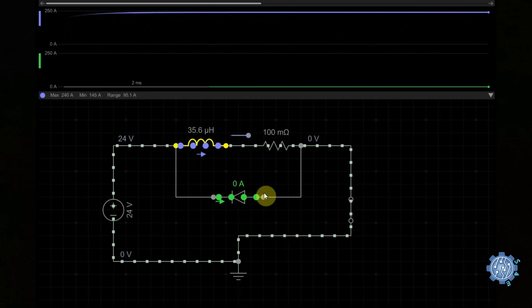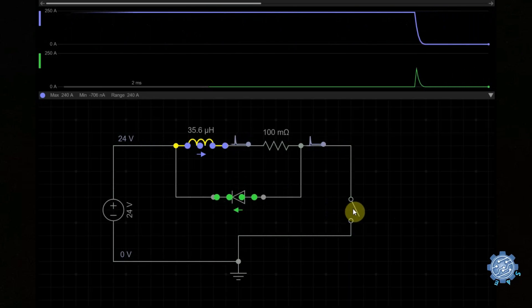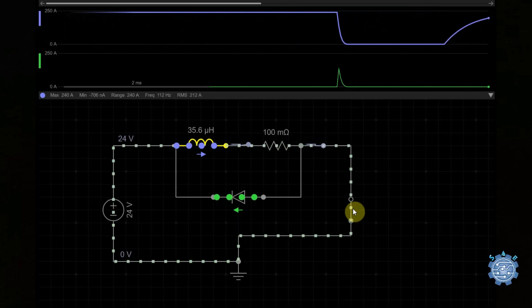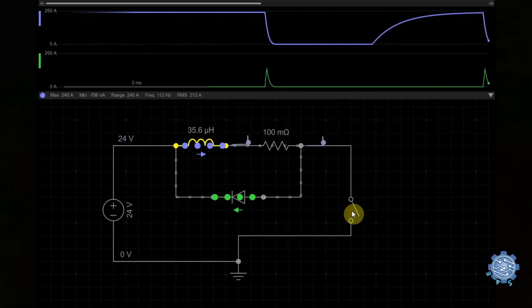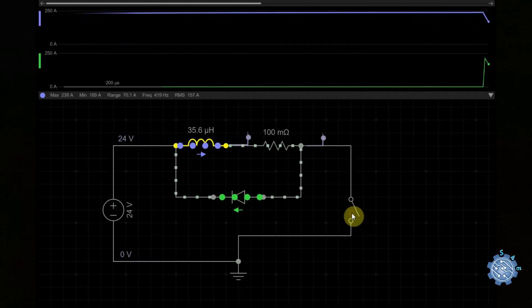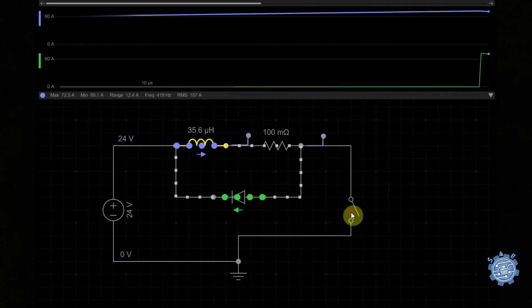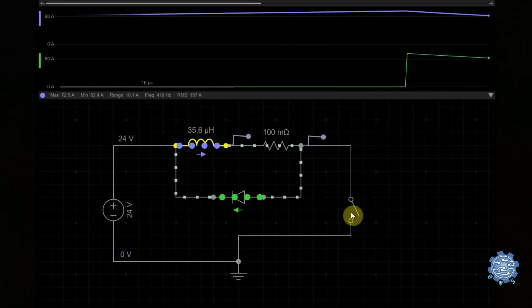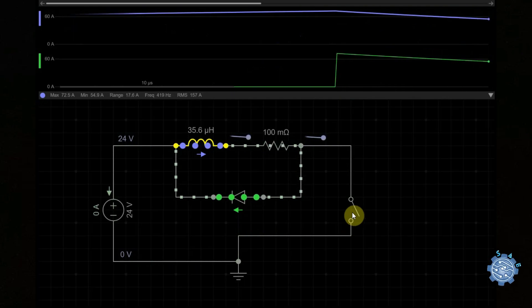When the switch is turned off, the inductor is already charged and the energy on it will have to go somewhere and it will go through the diode as the diode will close the circuit. The energy from the inductor is dissipated as heat by the diode.